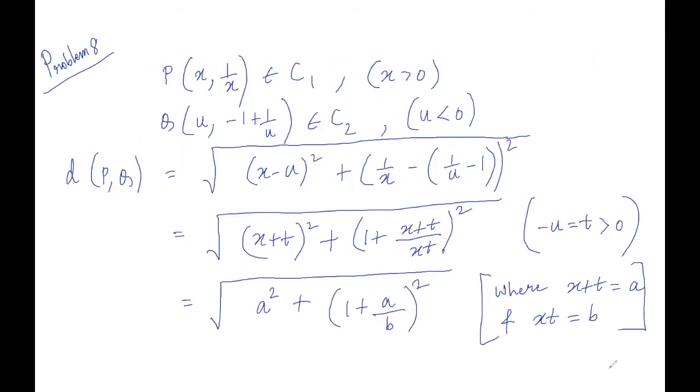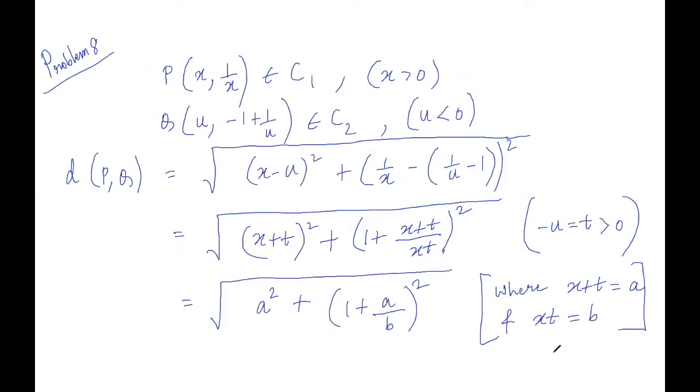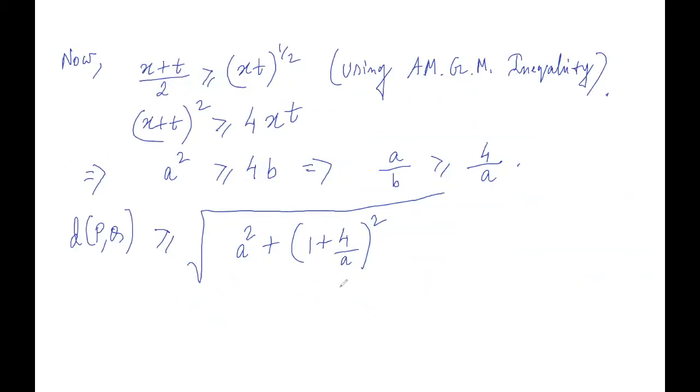Why did we do that? Because we have here a/b. Now I can write distance of P to Q is greater than or equal to the square root of (a squared plus (1 + 4/a) squared). Now you see that I have just replaced a/b with 4/a.